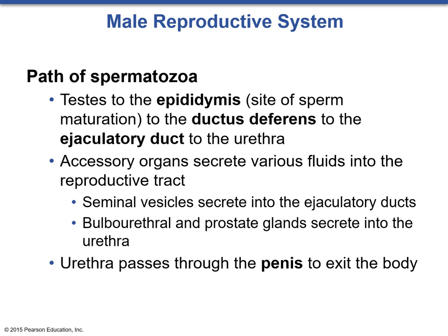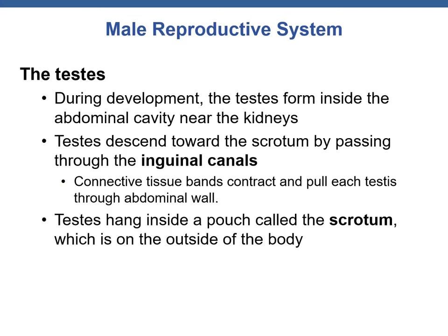There are different accessory organs that secrete various fluids into the reproductive tract — the seminal vesicles, bulbourethral gland, and prostate gland. From here, they would also secrete fluid which would push through the penis to exit the body. Over the next few slides, we're going to look at each one of the male reproductive structures in greater detail, starting with the testes. The testes are paired structures suspended externally after birth in a pouch of skin called the scrotum, and they function to produce sperm cells and reproductive hormones.